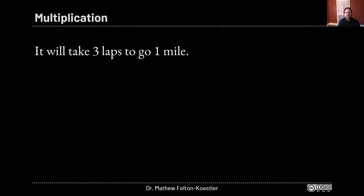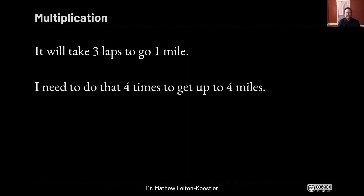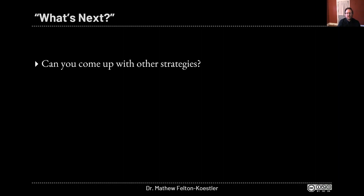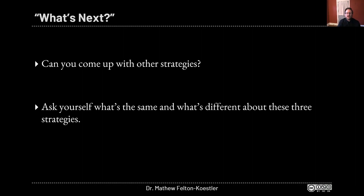Or, you might have thought of it something like this: I know it's going to take three laps to go one mile, and I need to do that four times to get up to four miles, so I can do four times three to get twelve laps. These are all great strategies. Do you remember how I said Emily asked a mathematician's question because mathematicians love to ask what's next? These are not the only strategies — see if you can come up with any others. Or look back at these three strategies and think about what's the same and what's different about them. That really helps you think about the big ideas going on in the problem.